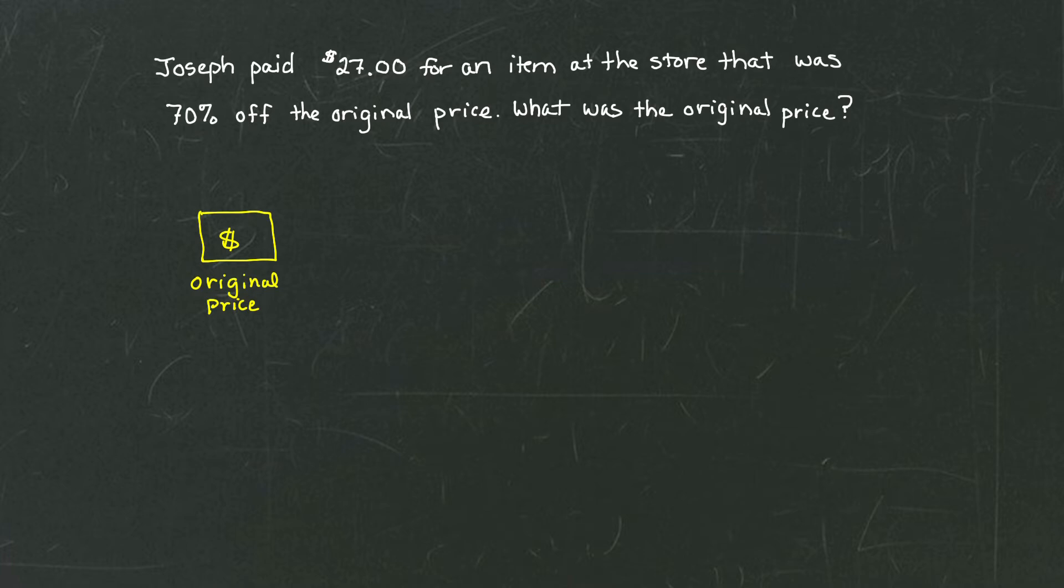Now, it goes on sale for 70% off its original price. So when it goes on sale for 70% off its original price, that means we're going to discount it or subtract 70% of that original price, whatever that was. That result is going to wind up and be our sale price, or $27.